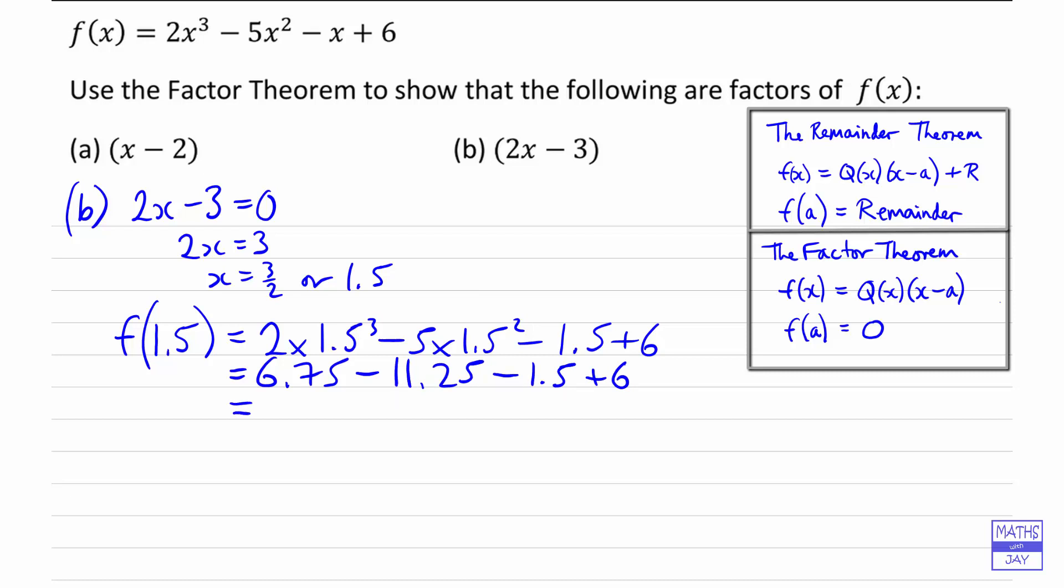So we're getting 12.75 minus 12.75, so we get as required zero. That tells us that 2x minus 3 is a factor of f(x).